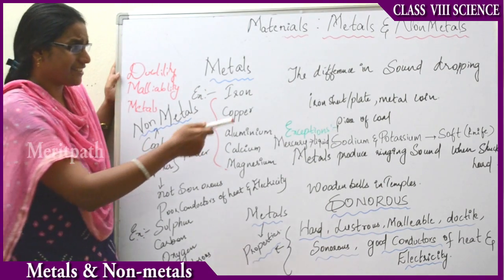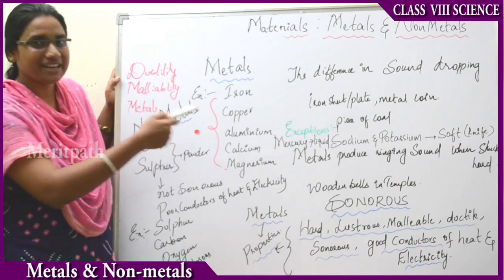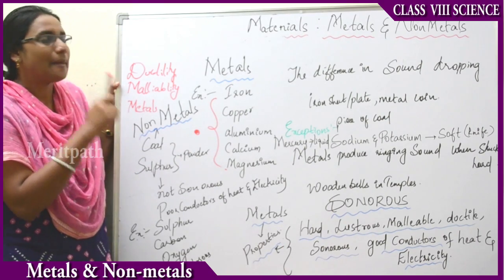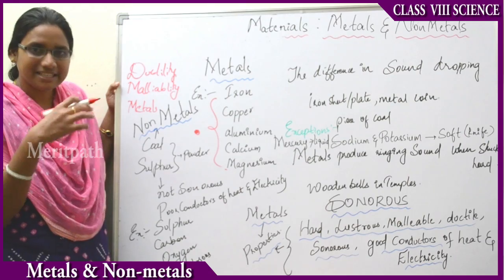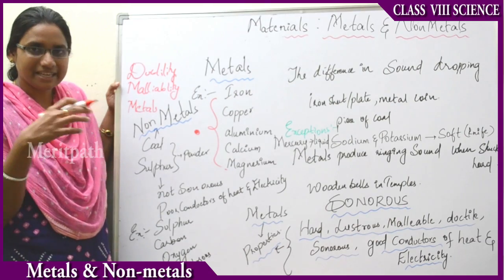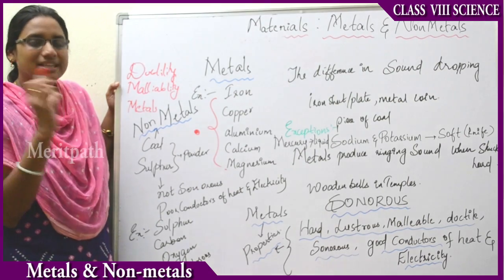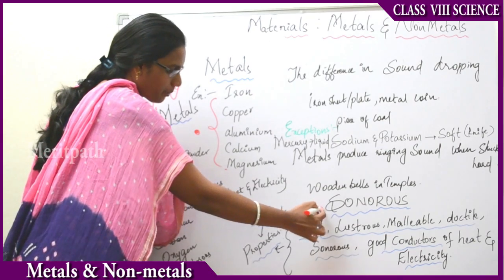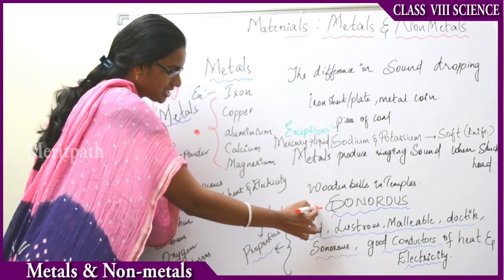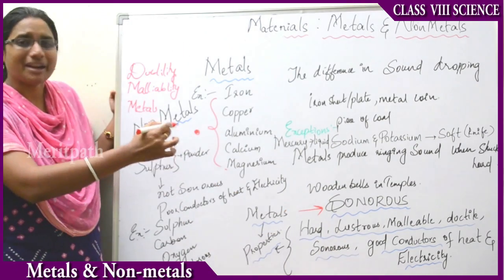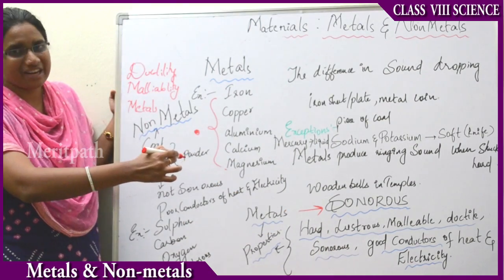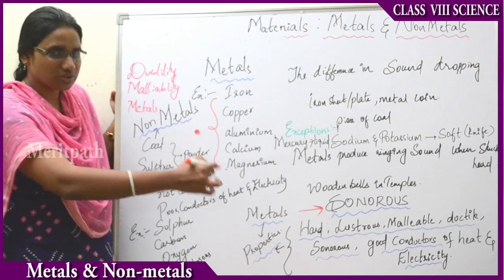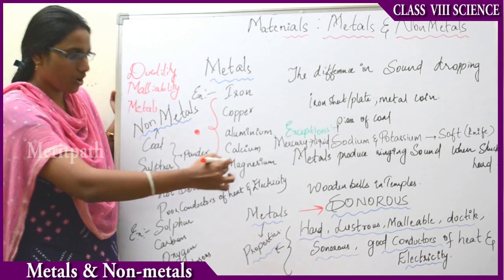Previously I mentioned the ringing sound. The ringing sound generated when any material falls down results in some sound. That sound is known as sonorous. That property is known as sonorous, and mostly metals generate such sounds. Therefore, we can also classify metals by this property — sonorous.